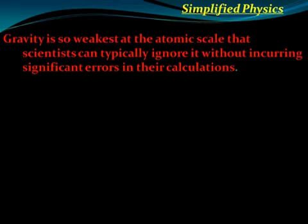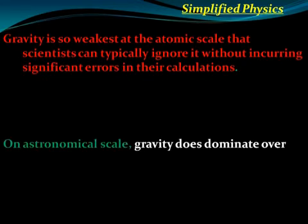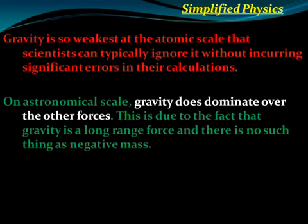Gravity is the weakest at the atomic scale, so scientists can typically ignore it without significant errors in their calculations. Gravity is too weak at this scale and ignoring it does not introduce any error, so scientists usually ignore the gravitational force at the atomic scale.